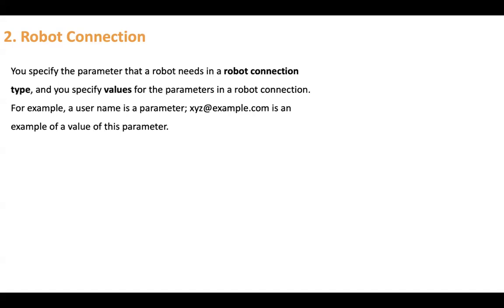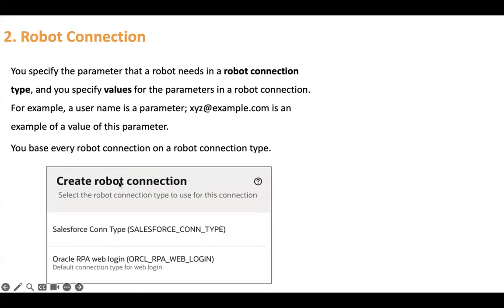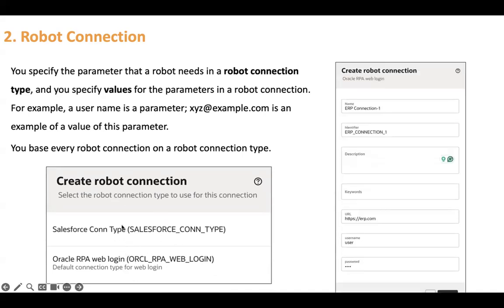The second term is connection. After your connection type is created, you create a connection based on the existing connection type where you provide the actual values. You must specify the parameter values that a robot needs in a robot connection. For example, when we created the connection type with properties URL, username, and password, you specify those actual values in the robot connection — like username is a parameter and you add a value such as xyz@example.com. Every robot connection must be based on a robot connection type.